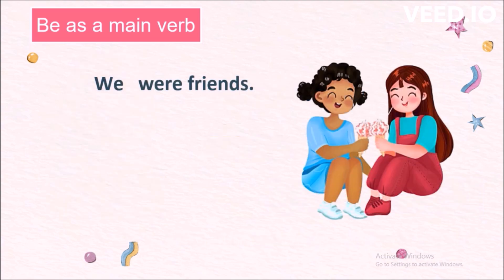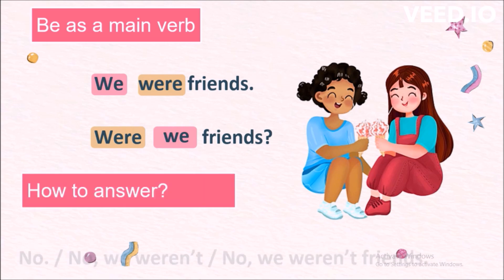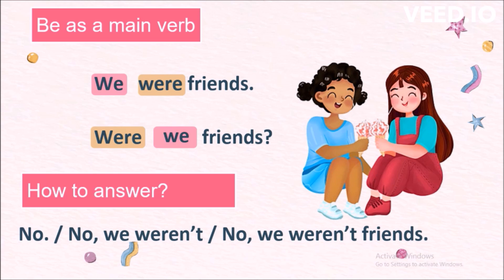In 'We were friends,' we is the subject and were is the main verb. To form the question, we change the word order: Were we friends? First the main verb, then the subject, and the rest of the sentence. How to answer: we can either say no, or no we weren't, or no we weren't friends.